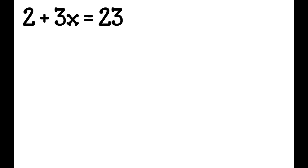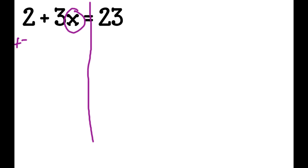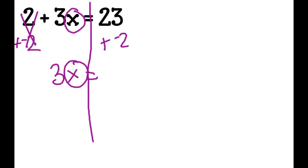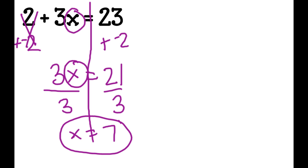Example 2a: 2 + 3x = 23. This is where people start to get confused. I draw my line and circle my variable. What addition or subtraction is stopping x from being by itself? A lot of people instinctively say 3, but 3 and x have a multiplication relationship. So 2 is the addition relationship to x. I add negative 2 to both sides. They cancel out, leaving 3x = 21. Then divide both sides by 3 — x equals 7.